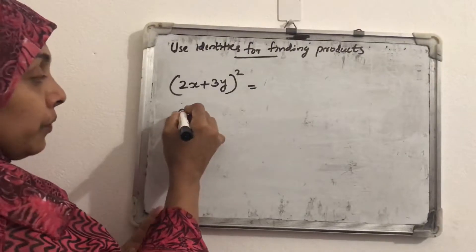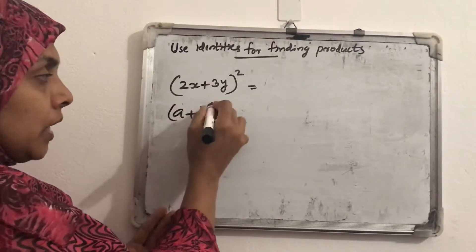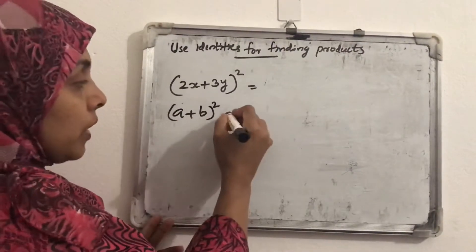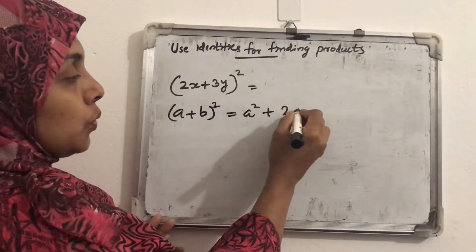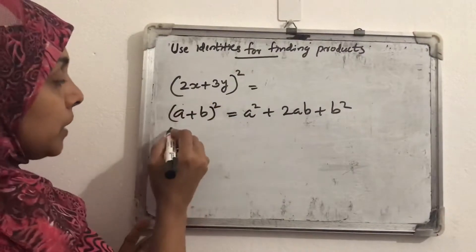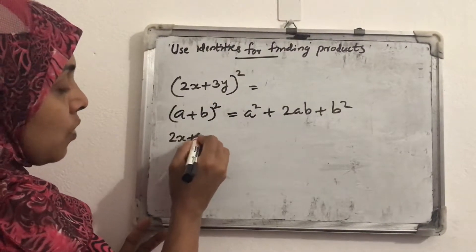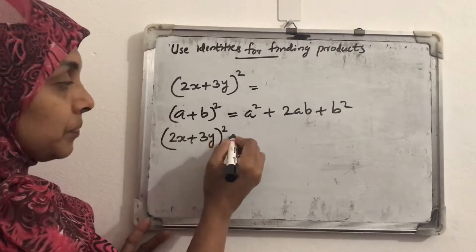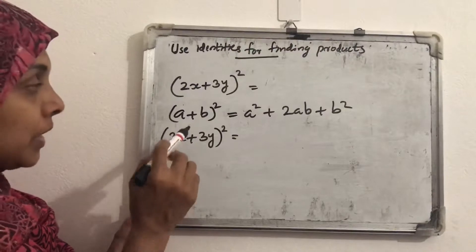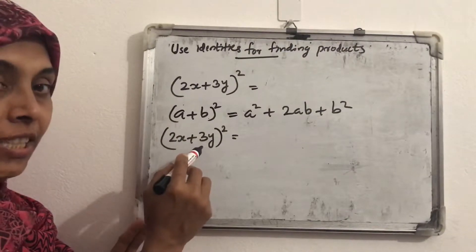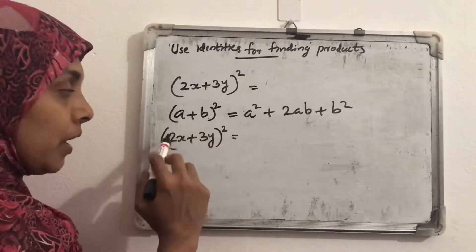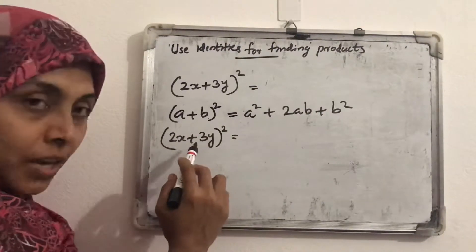Since we know the identity (a + b)² = a² + 2ab + b², we want to write which identity we are using first. For (2x + 3y) whole square, in this case, instead of a, the term here is 2x, and instead of b, here it is 3y. So substituting, instead of a we write 2x and instead of b we write 3y.